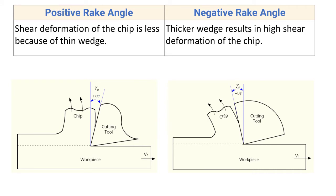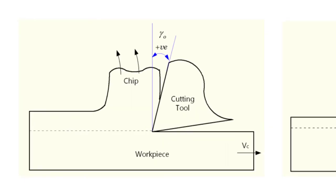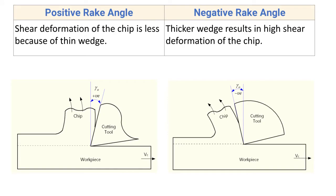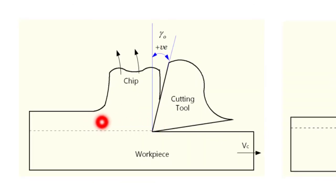Third difference: shear deformation of the chip is less because of the thin wedge. Due to this thin wedge, the shear deformation of the chip is less. The material in front of the tool tip is subject to plastic deformation and shears off along the face of the cutting tool. The tip of this cutting tool is very sharp because of the positive rake angle, and that is why shear deformation of the chip is less.